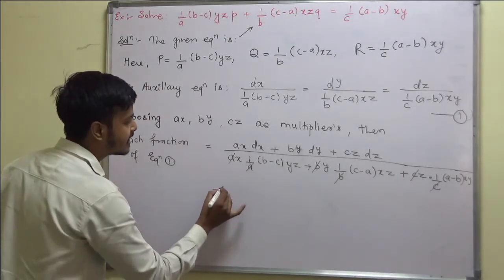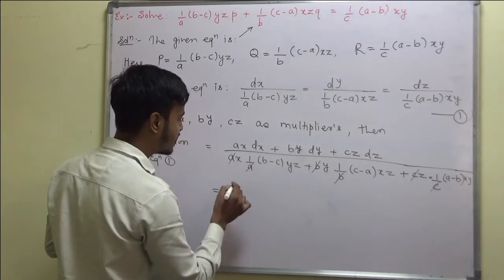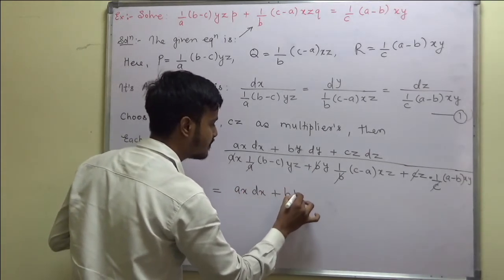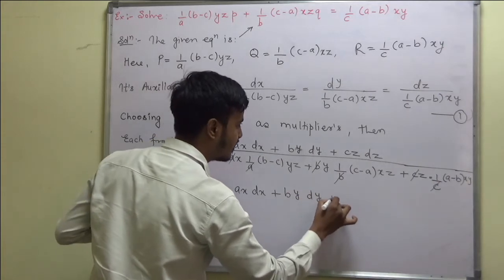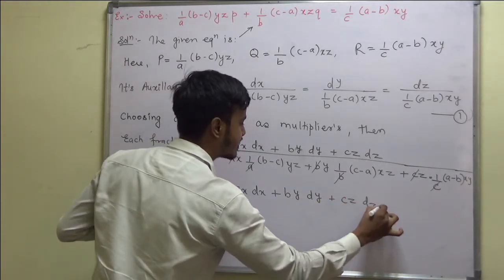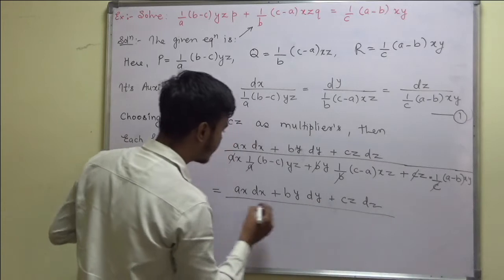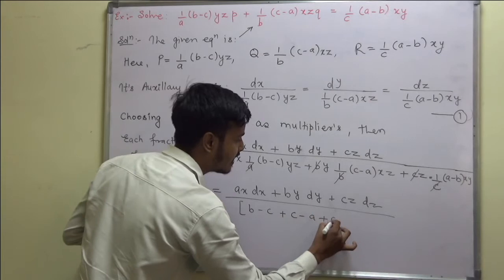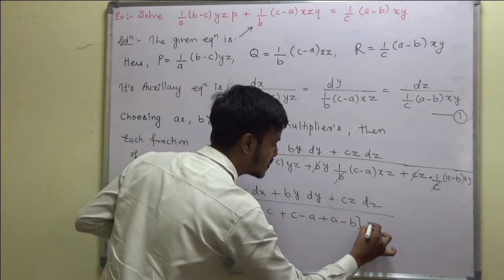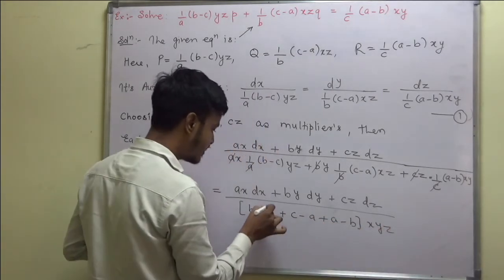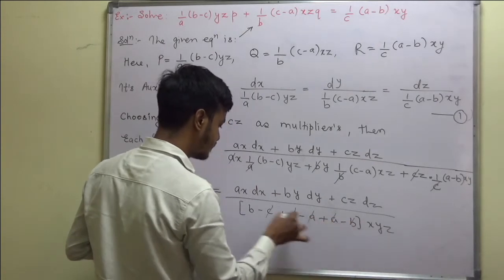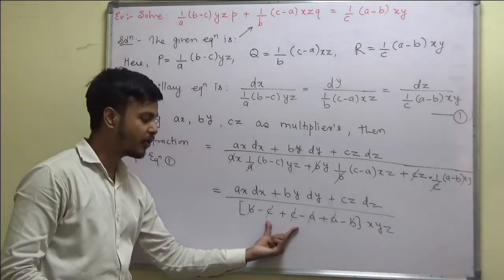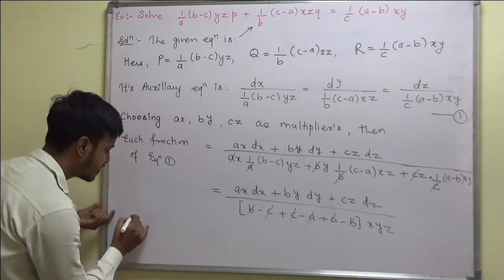Now you can take xyz common throughout and you can write a·x·dx plus b·y·dy plus c·z·dz upon xyz common and we remain with (b-c), (c-a), (a-b) into xyz. And all these get cancelled. Numerator, denominator 0 implies numerator 0.